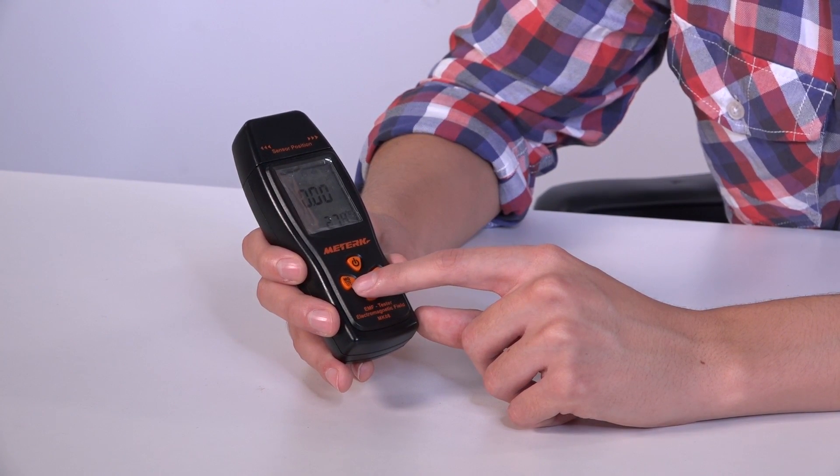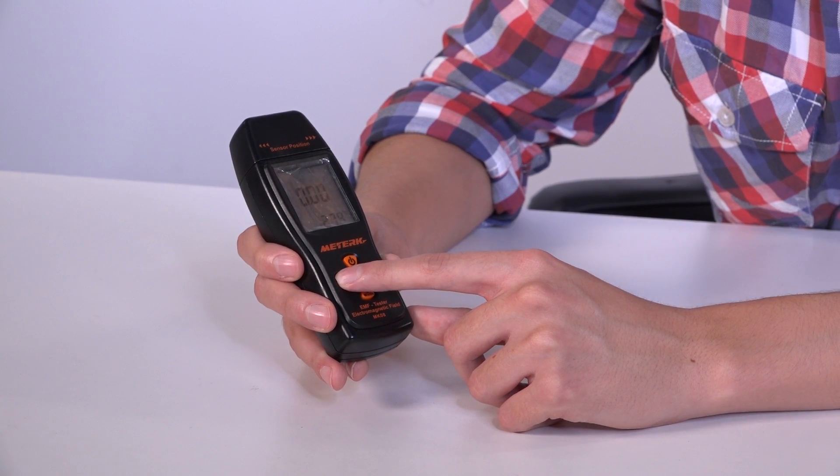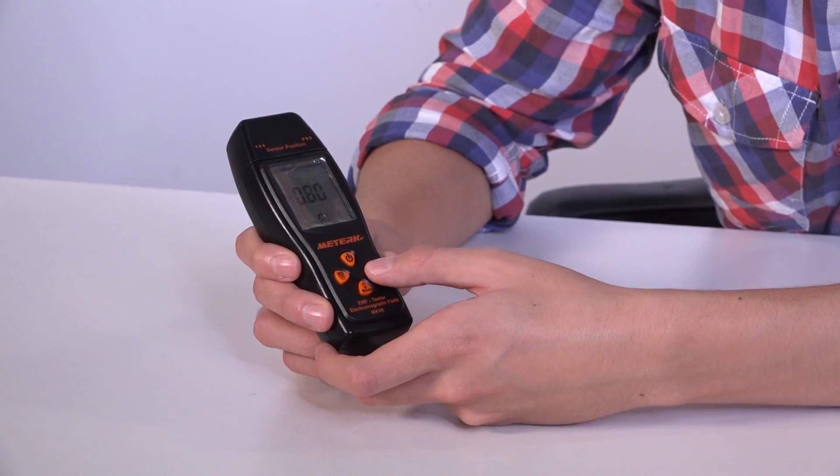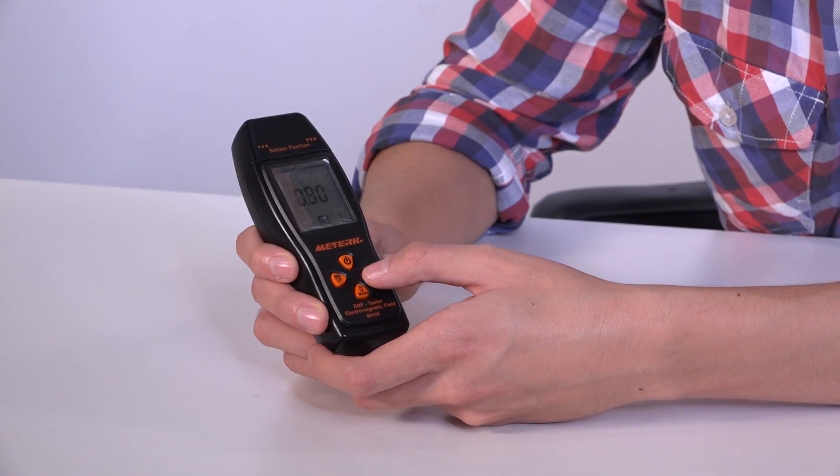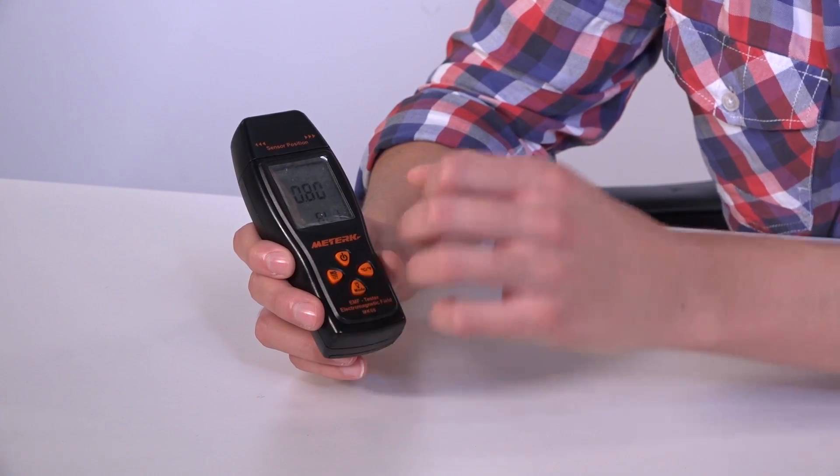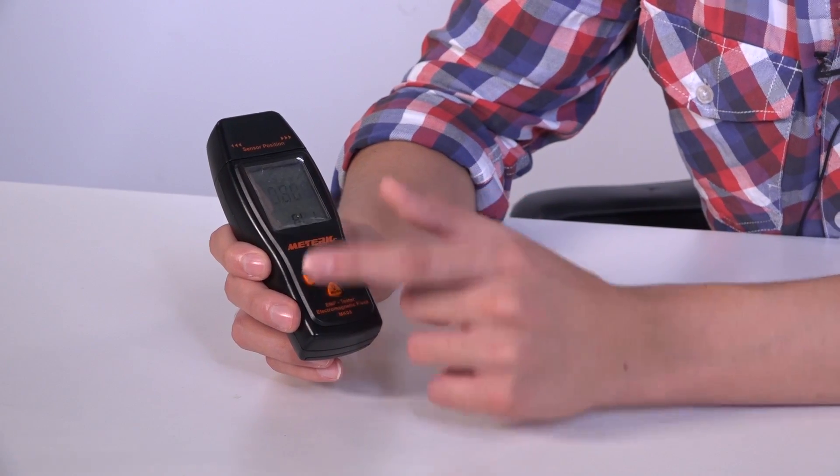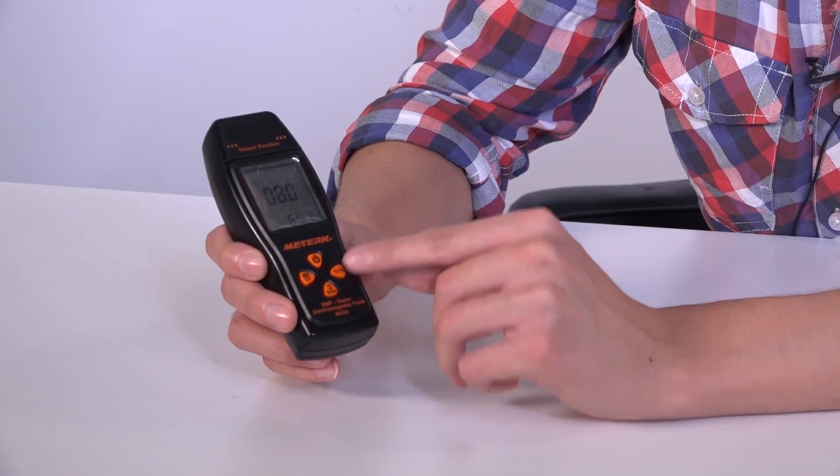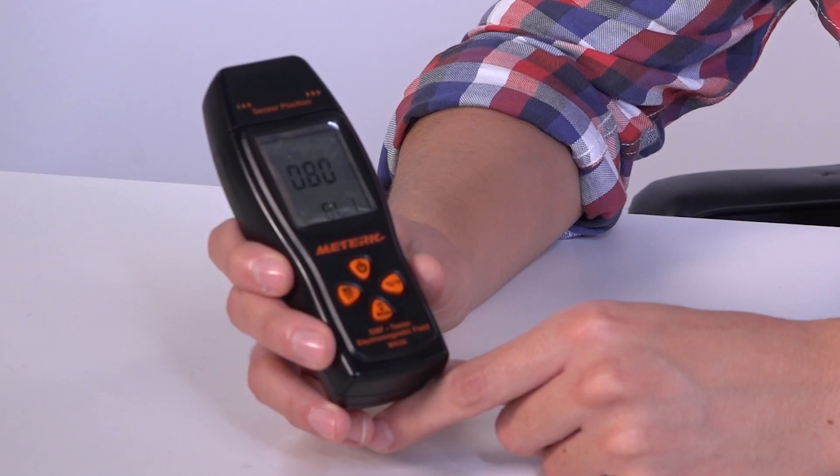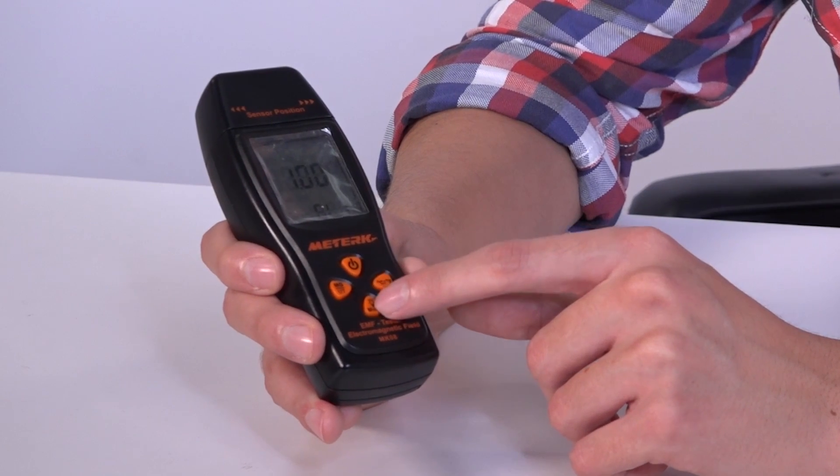The second function of this button, the long function, is that if you leave it pressed, you can change the settings with these two buttons, either it goes up or down. It's the limit in which you want the sensor to start beeping. Remember we were saying about the sound here, you can enable or disable the sound of this alert. The sensor will start beeping once we go over the level we set on the tester.